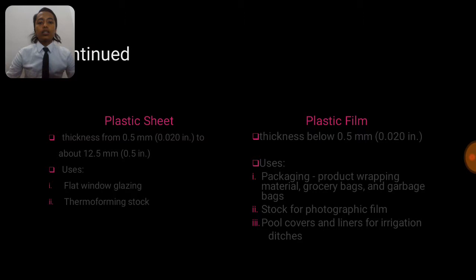The plastic sheet's thickness usually is from 0.5mm or 0.02 inch to about 12.5mm or 0.5 inch. The plastic sheet usually is being used as flat window glazing or thermoforming stock. For the plastic film, their thickness is usually 0.5mm to 0.02 inch. The plastic film is usually used for packaging such as product wrapping material, grocery bags and garbage bags. They also have been used as stock for photographic film and pool covers and liners for irrigation ditches.